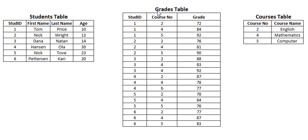Let's go to the second table — the grades table. In this grades table, we have a student ID column and two new fields: the course number and the grade. If I'm looking at this table alone, I might not really understand what's going on. I know this is course and this is grade, but what does student ID mean? What does course number 245 mean? There is a need to connect this table to another table to make sense of it — and that's where modelling comes in.